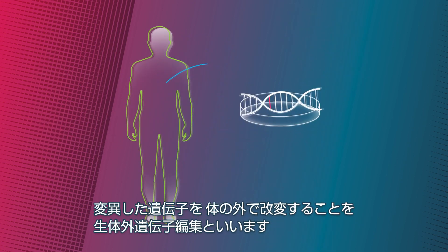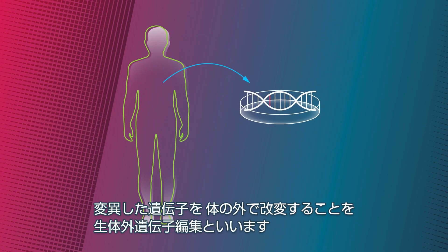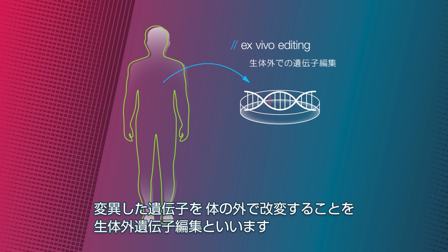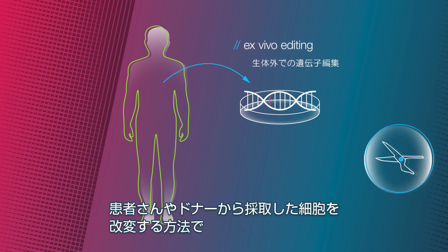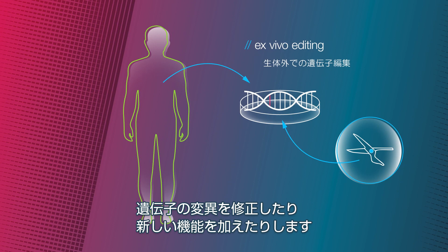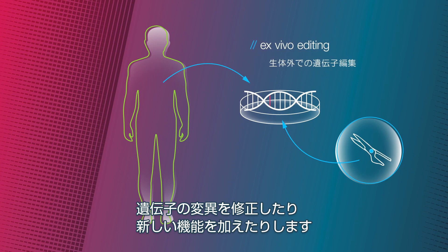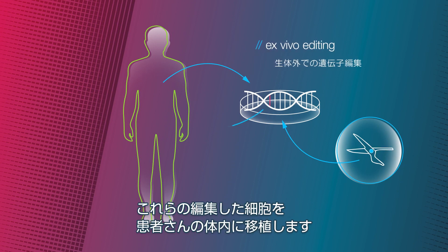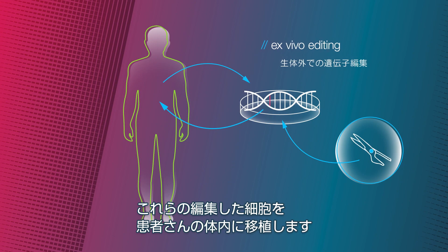Correcting mutated genes outside the body is called ex vivo editing. In this scenario, cells that have been taken from the patient or from a donor are modified in order to correct gene mutations or introduce new functions. These cells are transplanted into the patient after being edited.